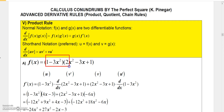You might be tempted to multiply this out using the distributive property and come up with one long polynomial. I'm not saying that won't work, but it won't teach you the product rule, because there are functions later that you can't multiply together like you could these two. So we're going to call the first function, 1 minus 3x squared, u, and the second factor, 2x squared minus 3x plus 1, v.